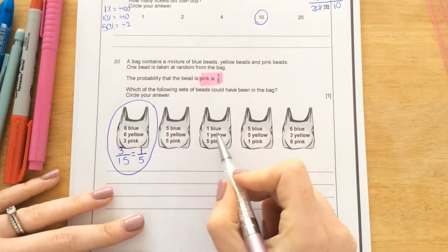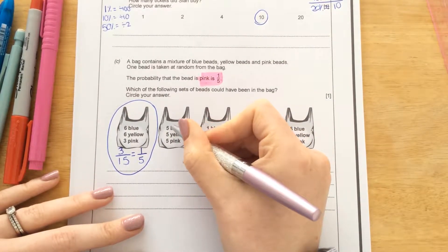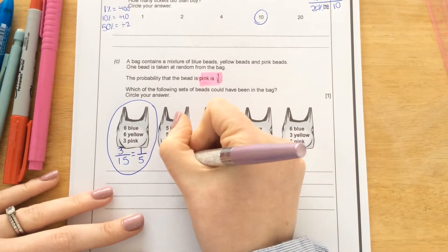So I'm just going to go through these remaining ones just as a practice. So I would work out the total first. 5, 10, 15 beads in total.